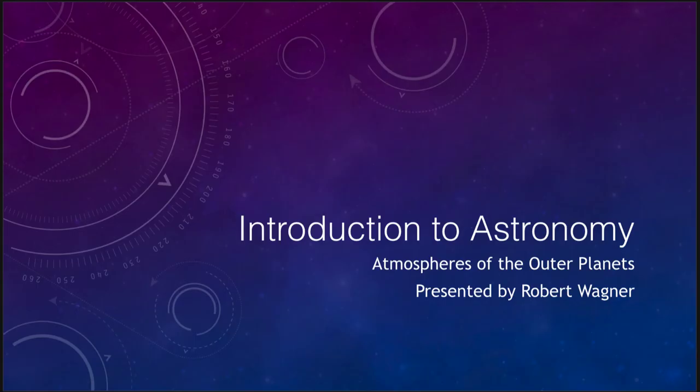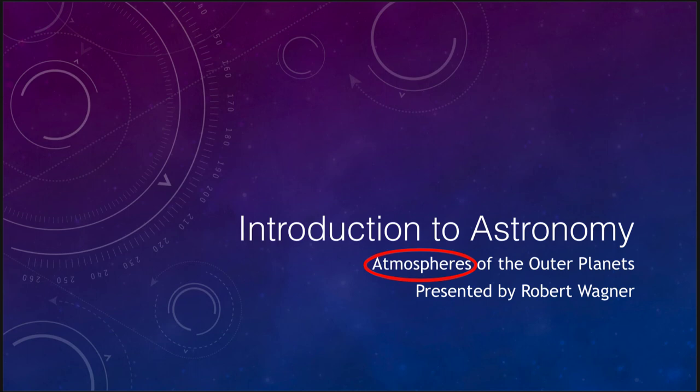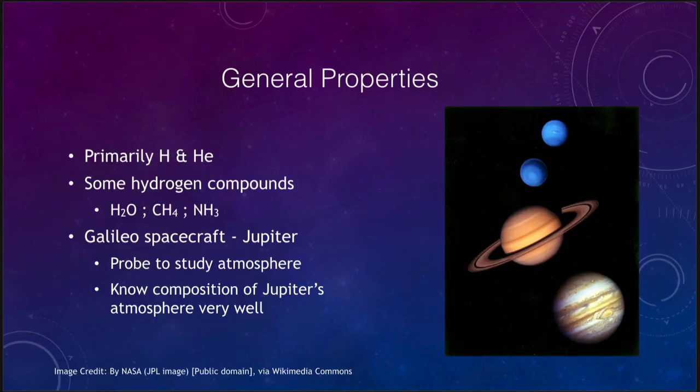Greetings and welcome to the introduction to astronomy. In this video we are going to continue talking about the giant planets, but most specifically their atmospheres. We're going to look at the outer layers, the areas that we can actually see of these objects, and try to better understand those. These are the areas that have been explored and photographed by various spacecraft. Let's get started with some of the general properties of these planets.